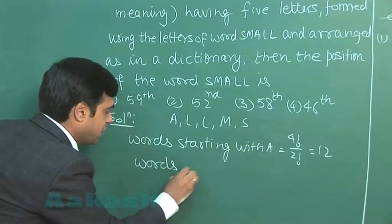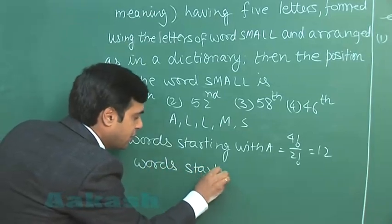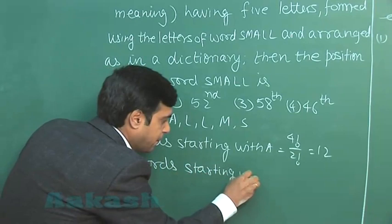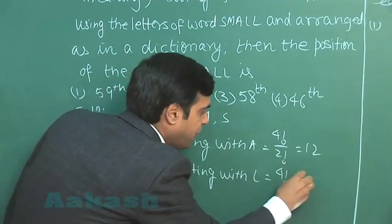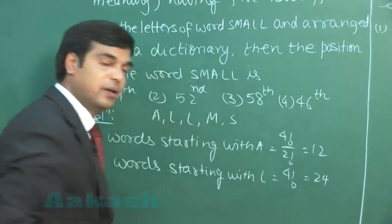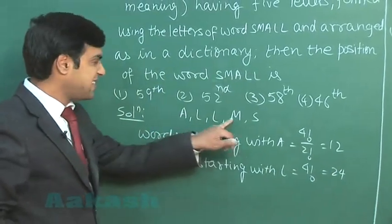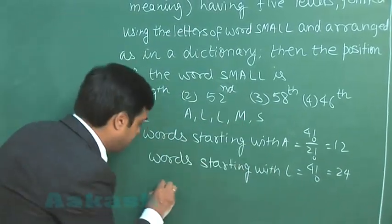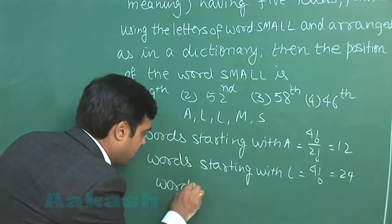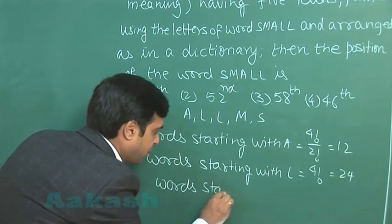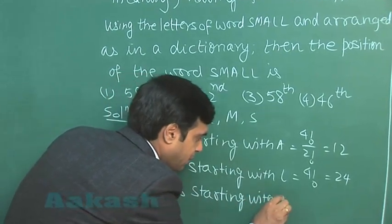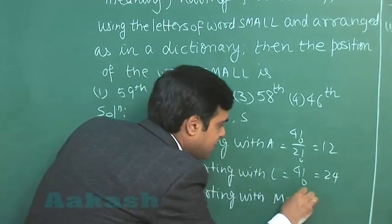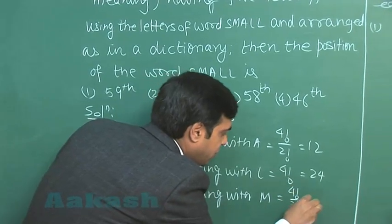Next, words starting with L, this is 4 factorial, that is 24. Then words starting with M, this is again 4 factorial by 2 factorial, that is 12.